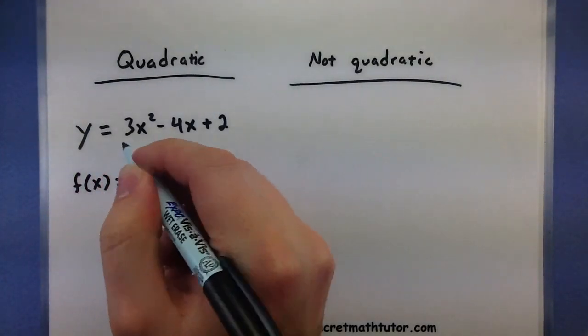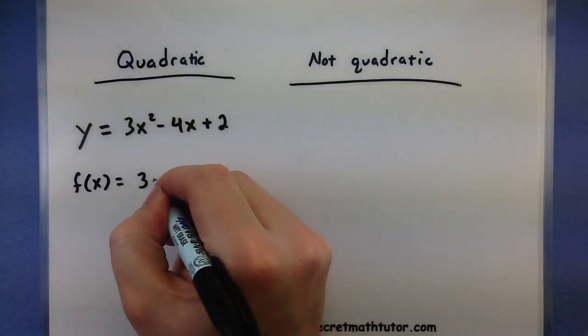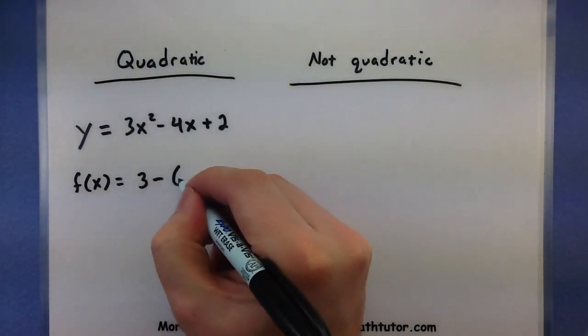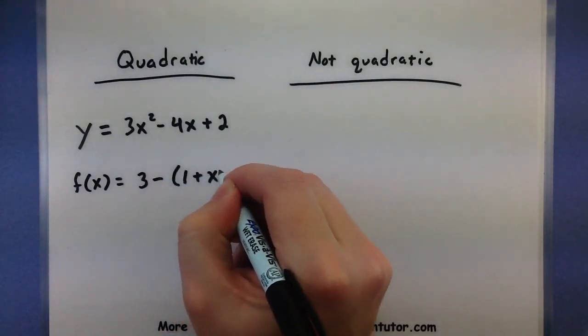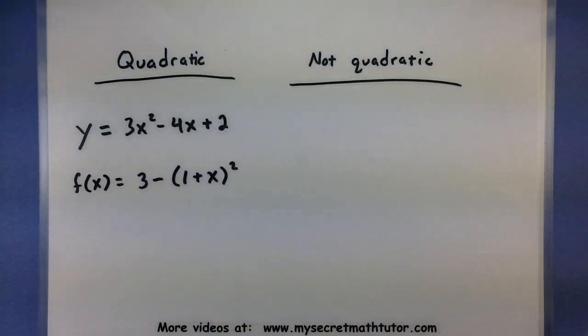f of x equals 3 minus (1 plus x) squared. This one's also quadratic but it doesn't quite look like that form on the first page. But here's how I know it is quadratic. If I was to multiply out these parentheses here, I would end up with an x squared. That's my key right there.